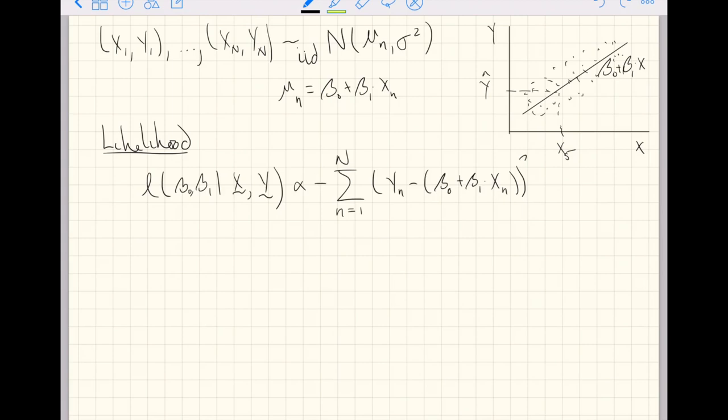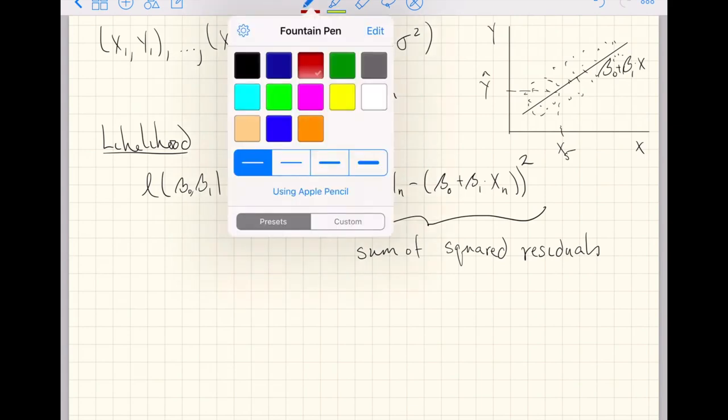This is the form of the simplified log likelihood, and that phrase sum of squared residuals comes about from this term because we are literally taking the sum of squared, you can see the squared above, and then let me go about explaining residuals.